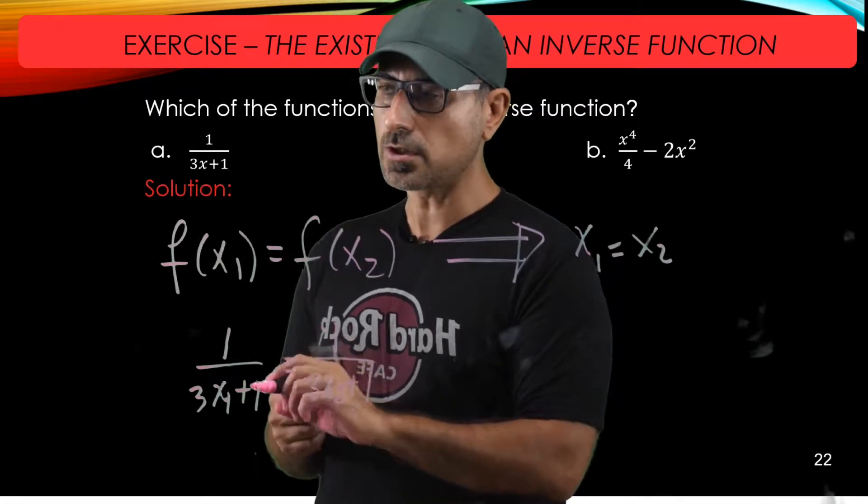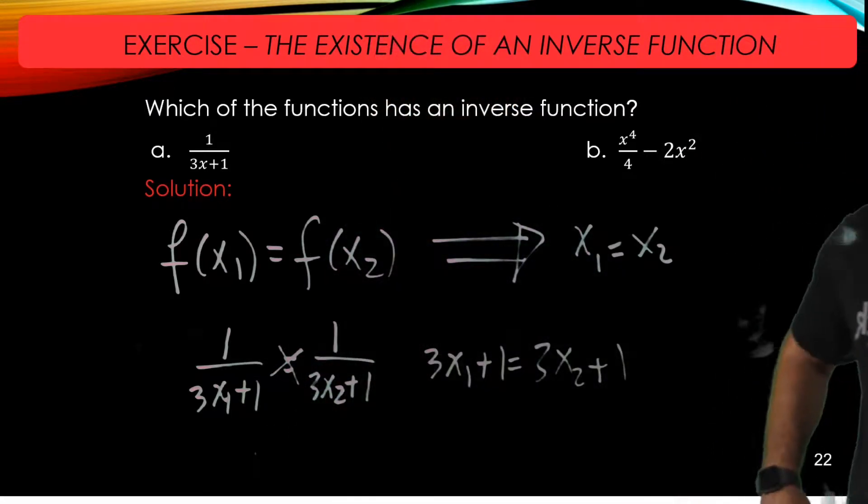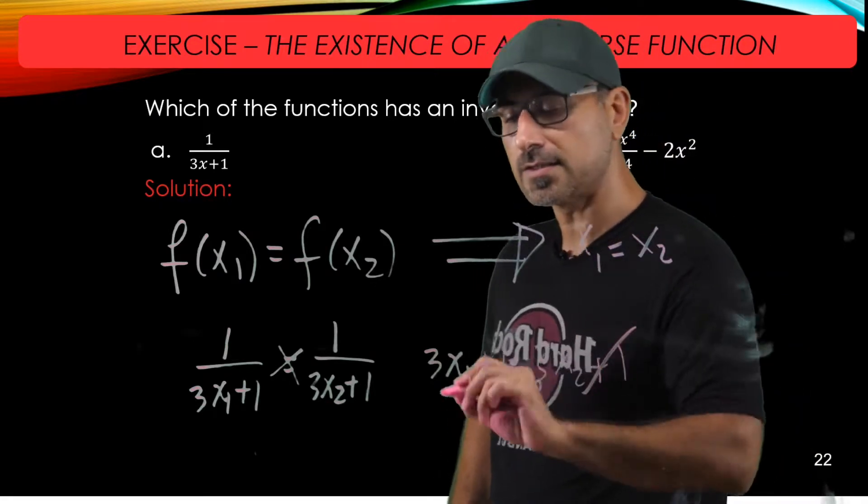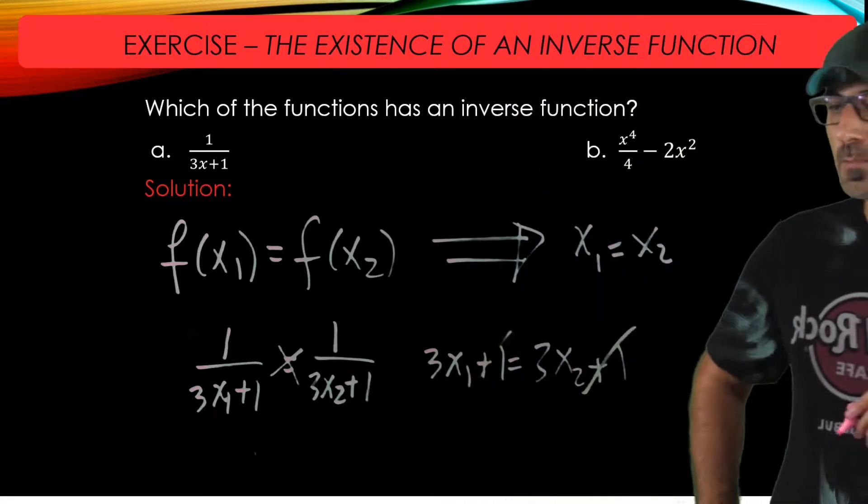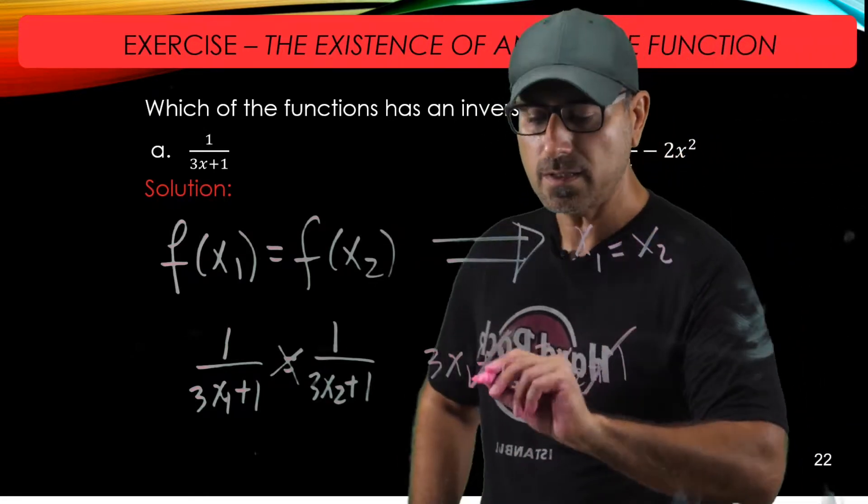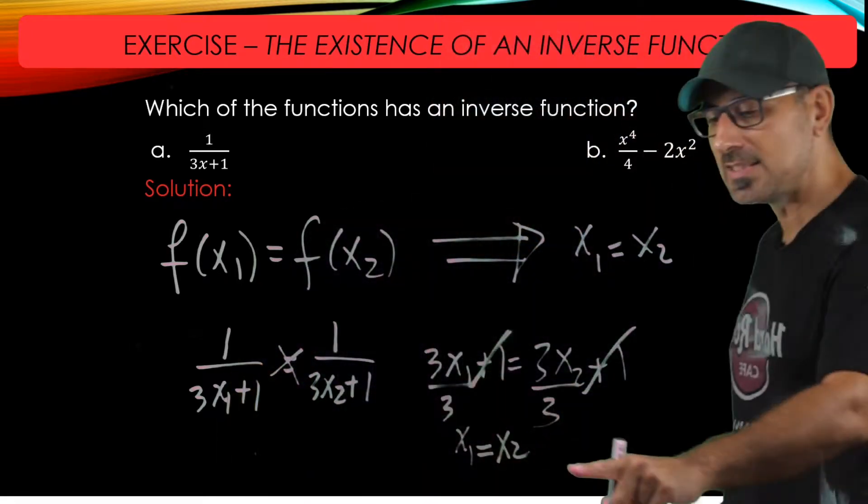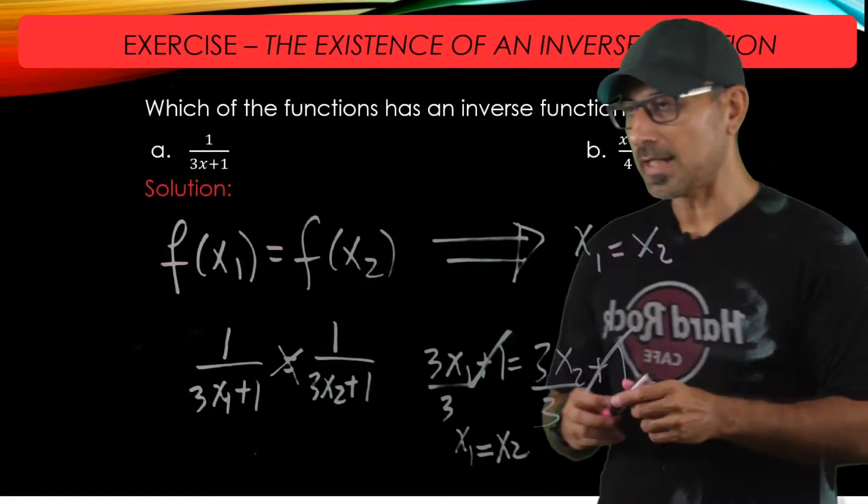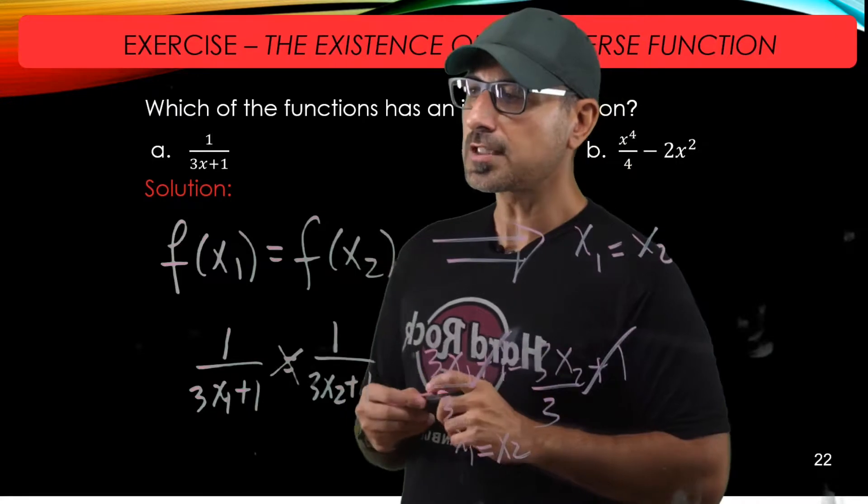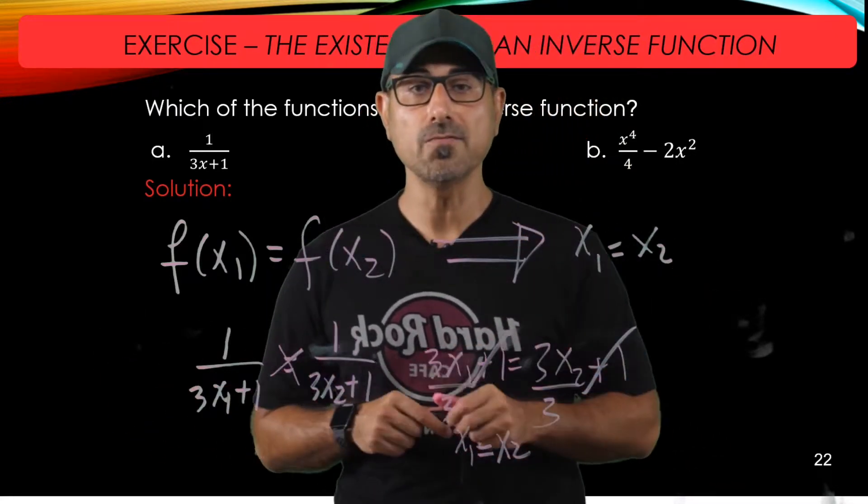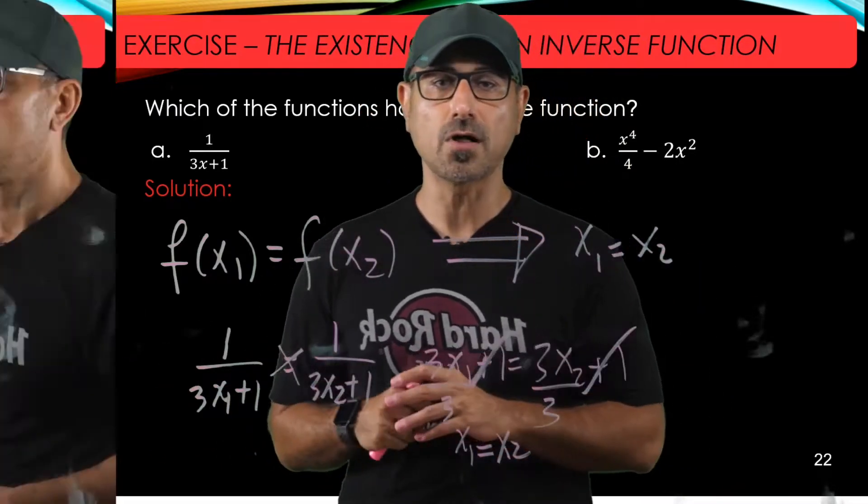So we're going to do the cross product. If you subtract one from both sides, and these guys cancel, and dividing both sides by three, yields exactly what I was looking for. So that means that one over three x plus one has an inverse, and you can go ahead and find the inverse of the function by using the methodology.